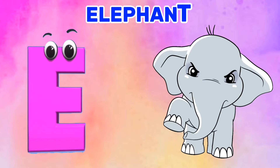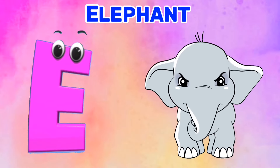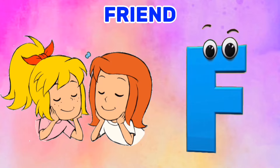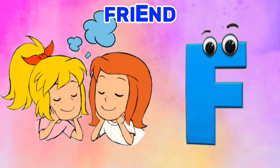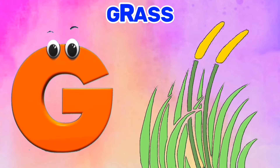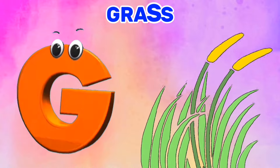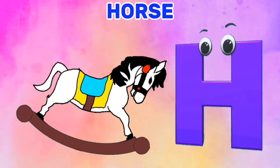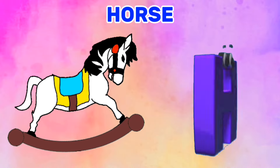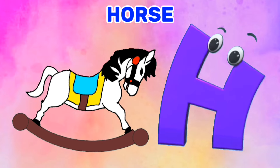E is for Elephant. F is for Friend. G is for Grass. H is for Horse.